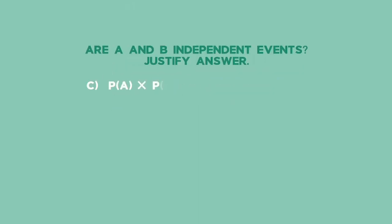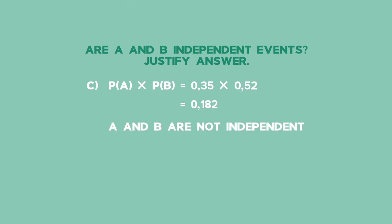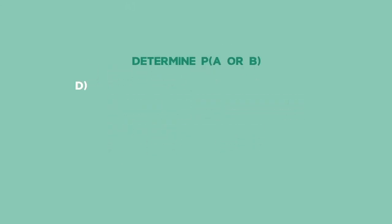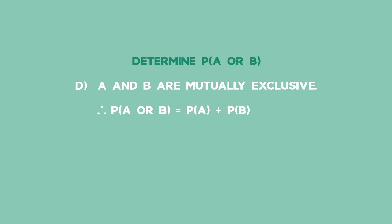Solution C: The probability of getting event A times the probability of getting event B is equal to 0.35 times 0.52, which equals 0.182. But in part B, we showed that the probability of getting A and B is equal to 0. So we can conclude that A and B are not independent, since the probability of A times the probability of B is not equal to the probability of A and B. Solution D: Since A and B are mutually exclusive, the probability of getting A or B equals the probability of A plus the probability of B, which gives 0.35 plus 0.52, equalling 0.87.